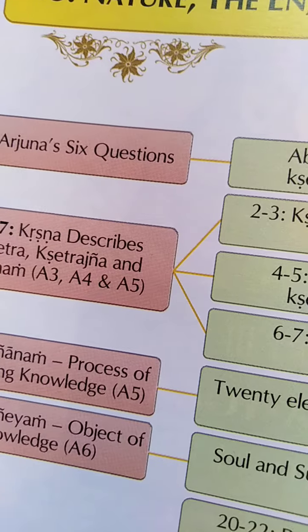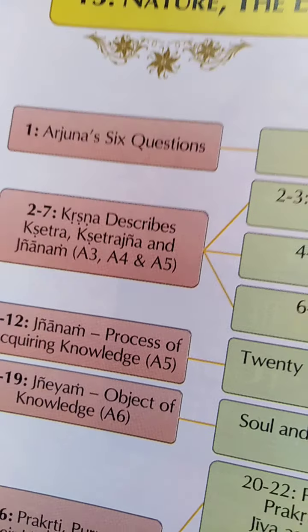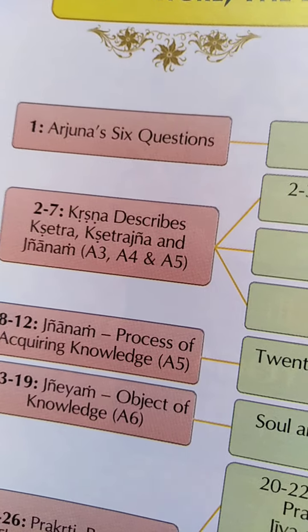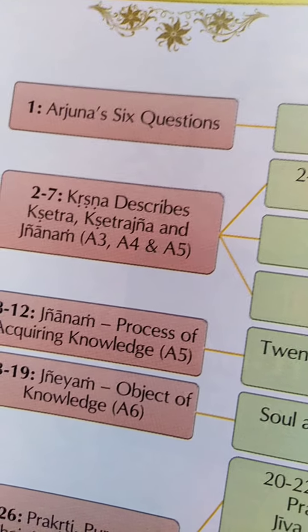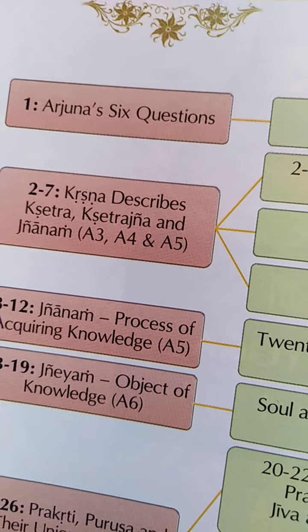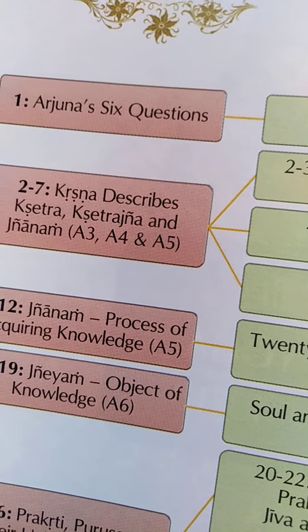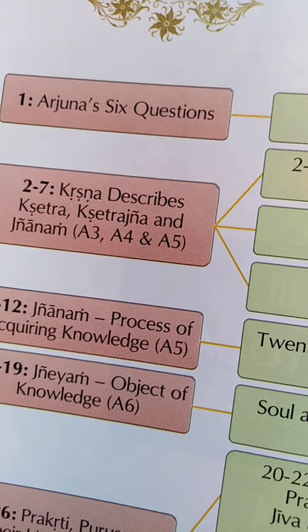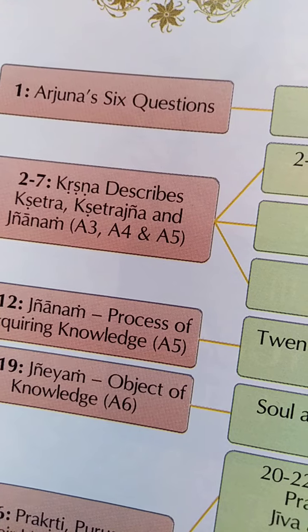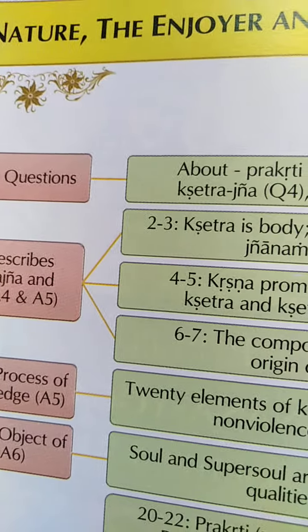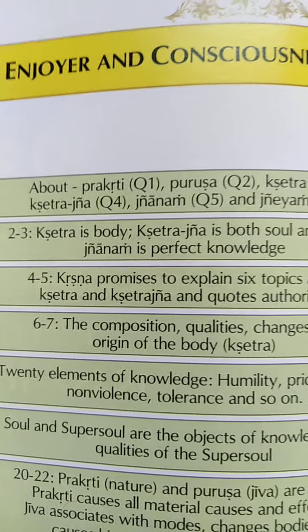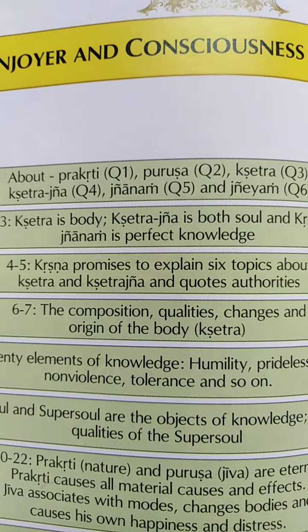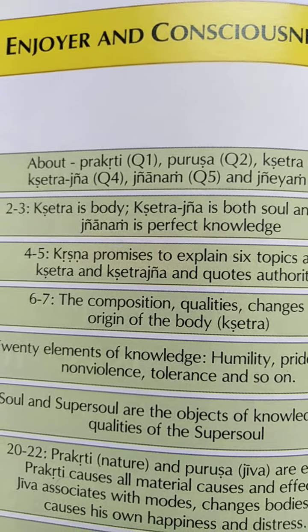Krishna very intelligently answers all these six questions in the rest of the chapter in great detail. In the second to seventh shloka, Krishna describes Kshetra, Kshetrajna and Gyanam. In the second and third shloka he says Kshetra is the body. Kshetrajna is both the soul and Krishna. And Gyanam is the perfect knowledge.